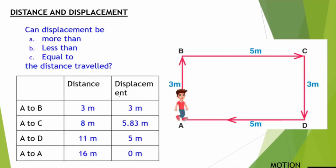Next, we have a question: can displacement be more than, less than, or equal to the distance traveled? Displacement can never be more than the distance traveled. Since displacement is the shortest path, it can be less than the distance traveled, or it can be equal to the distance traveled as seen in the case A to B, but it can never exceed the distance.